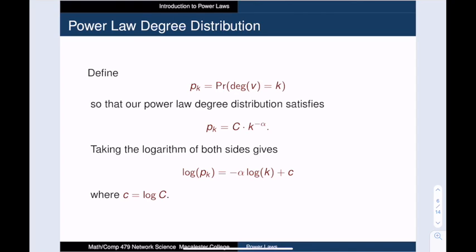Our power law can then be expressed as pk equals c times k to the minus alpha. So let's take the logarithm of both sides. The result is actually a linear relationship between log of k and log of pk. The slope of this linear relationship is minus alpha, and this is our power law exponent.